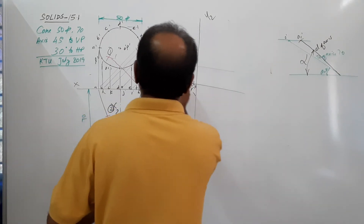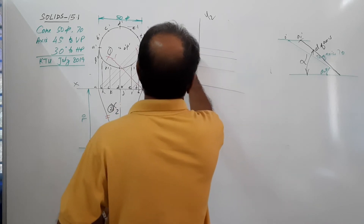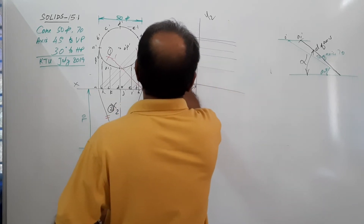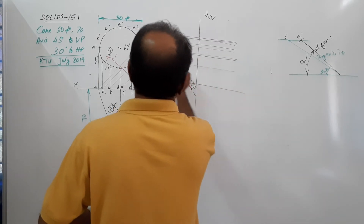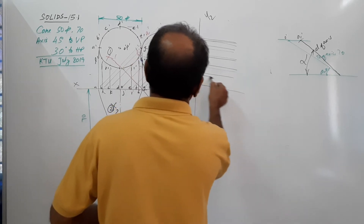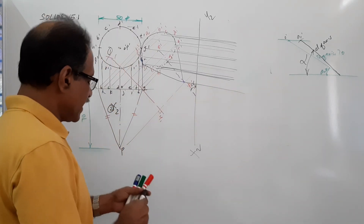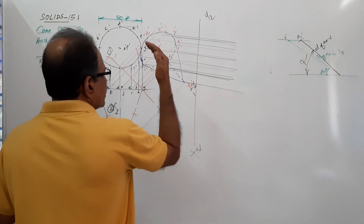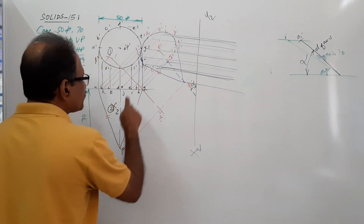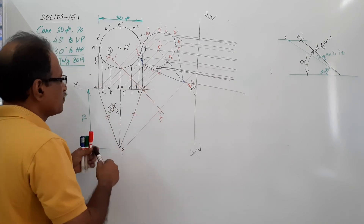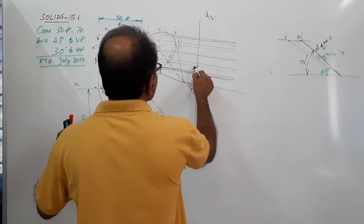Now you have to mark points. You are going to draw a new plan. The distance of the previous plan from the previous section — these distances are to be taken. G is at zero distance, so all projected through G gives G1.